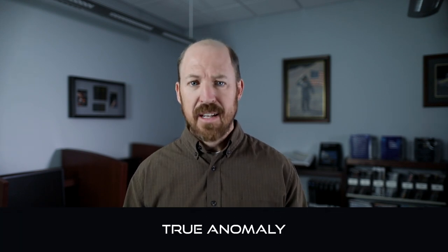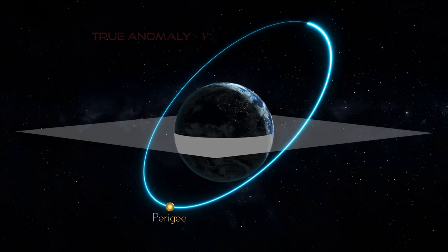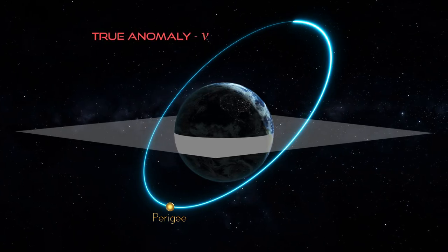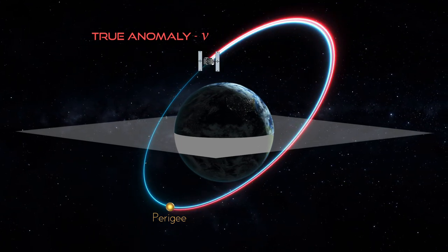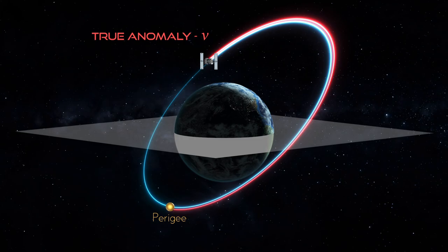While the first five COEs tell us something about the orbit, the last COE is all about the satellite. This COE is true anomaly, depicted with the Greek letter nu. True anomaly tells us where in the orbit the satellite is located and is measured in degrees from the orbit's perigee to the satellite's location. Just because the six COEs have been identified does not mean we can determine where the satellite is within its orbit. Yes, true anomaly tells us where the satellite is located, but we need time to know when it would be there or when it was there.